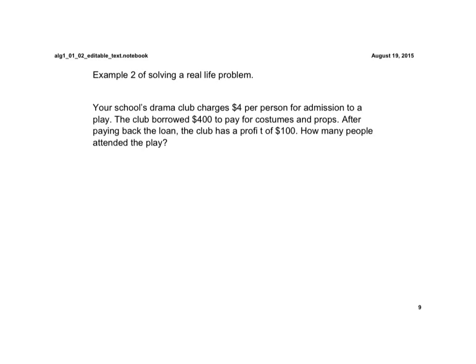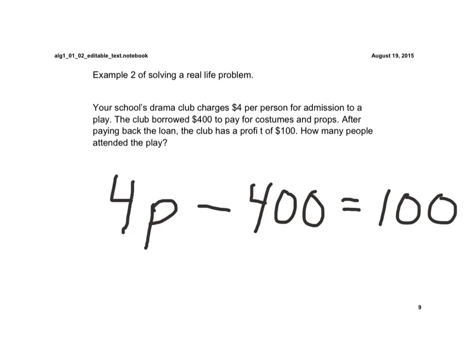So, in this case, they charged $4 per person. So, 4 times P, that would give us the total amount of money that they had. They had to pay back $400, and they would still have $100 left. So, now we have this equation that we can solve for P to help us determine how many people attended the play.